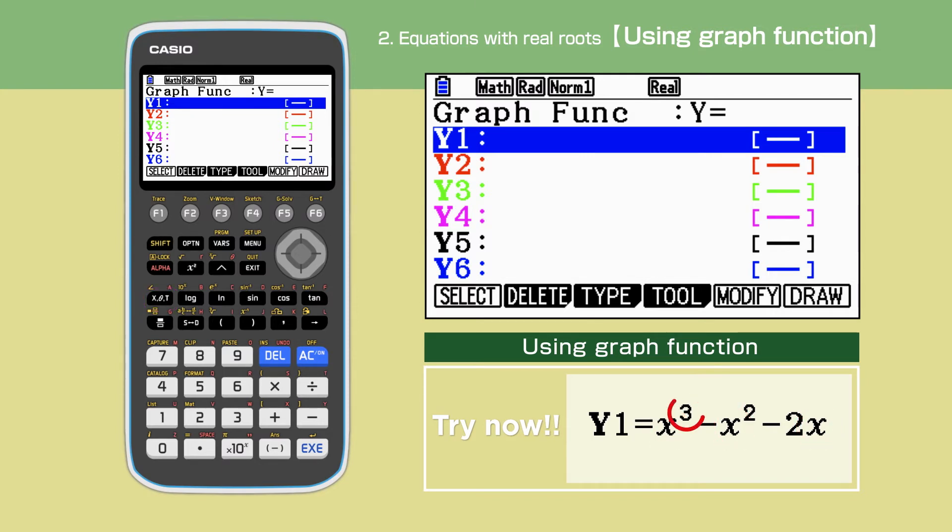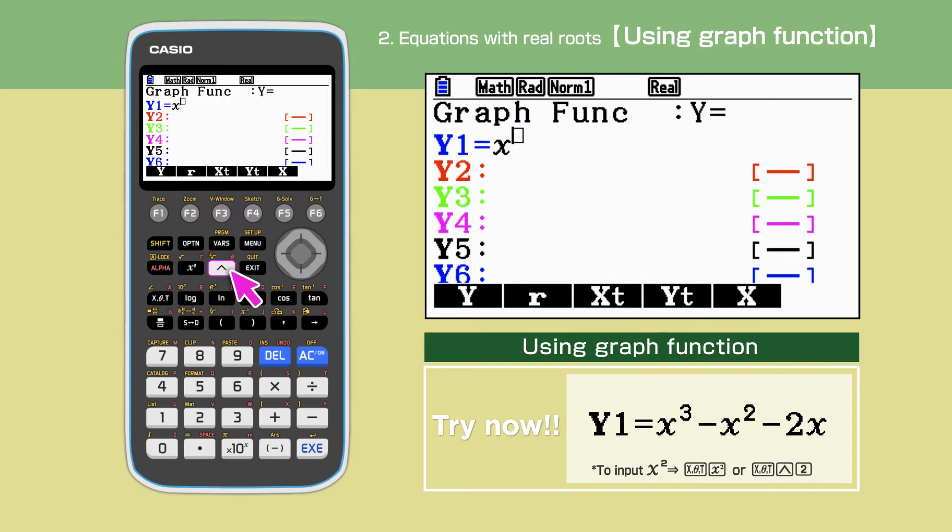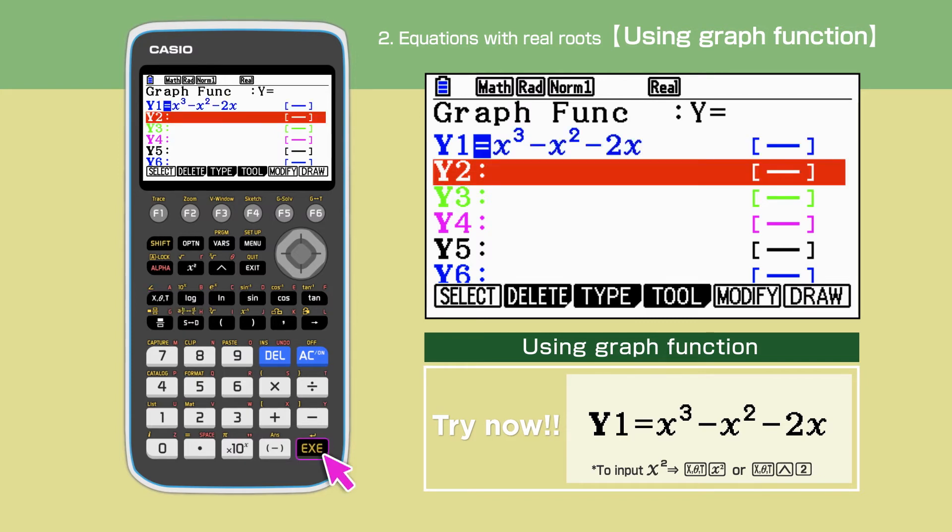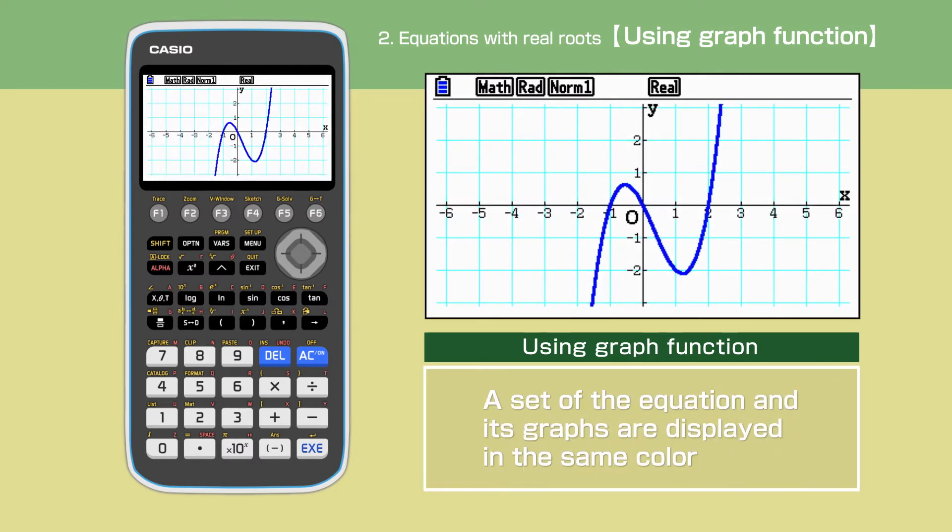To get the power of 3, we will need to press the caret key. Press F6 to draw the graph. The graph is drawn.